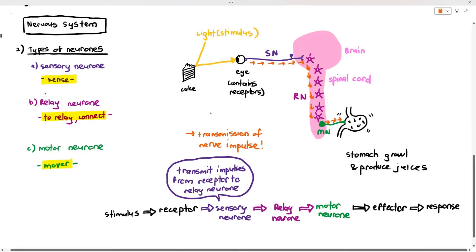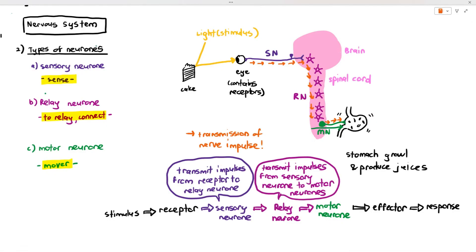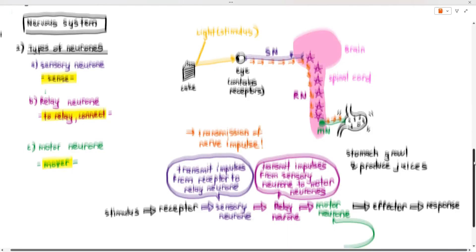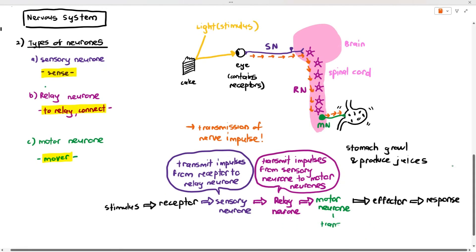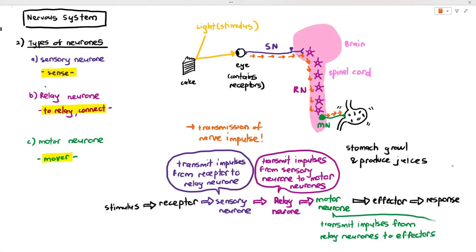What's the function of the relay neuron? The function of the relay neuron is to transmit impulses from the sensory neuron to motor neurons because it bridges the gap between the sensory and motor neuron. And the motor neuron, what is their function? Their function is to transmit impulses from the CNS or the relay neuron towards the effector.